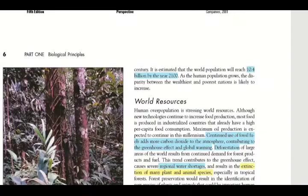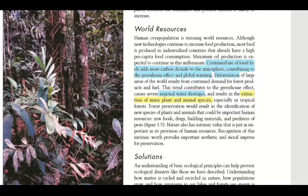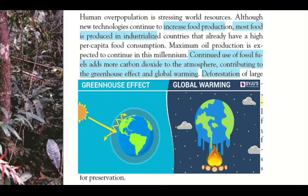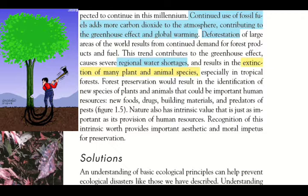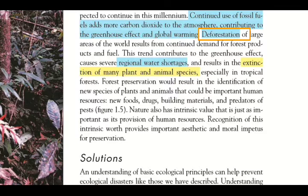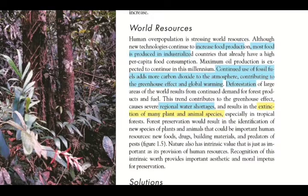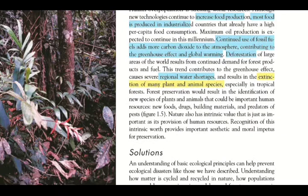The second main problem is world resources and how we are excessively using them without replacing them. Human overpopulation is stressing world resources. Although new technologies have increased food production, there is still high per capita food consumption. The continued use of fossil fuels adds more carbon dioxide to the atmosphere, contributing to the greenhouse effect and global warming. Deforestation — the cutting down of large areas of forest — results from continued demand for forest products and fuel, contributing to the greenhouse effect, severe regional water shortages, and extinction of many plant and animal species, especially in tropical forests.